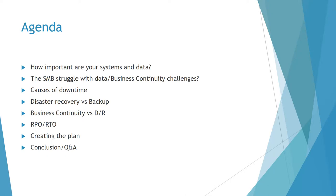We'll discuss some of those elements we need to take into account as small business leaders. Also, we'll discuss the causes of downtime — it comes from a variety of factors. It's not just the scary stuff you see on the Weather Channel; it's actually more frequently the little things. From there, different terminology: backup, disaster recovery, business continuity — those things are not equal to each other. We'll also go into RPO and RTO — more acronyms to memorize — and what those mean and why you need to learn them.